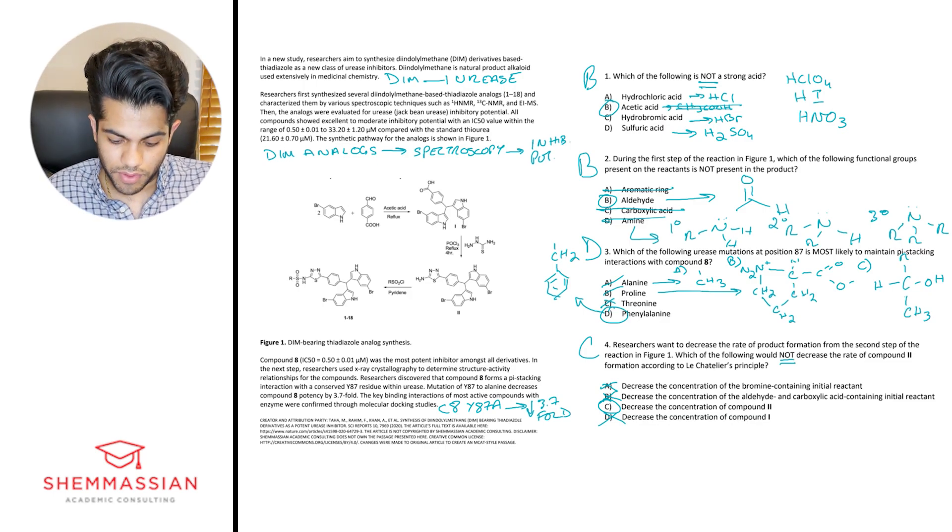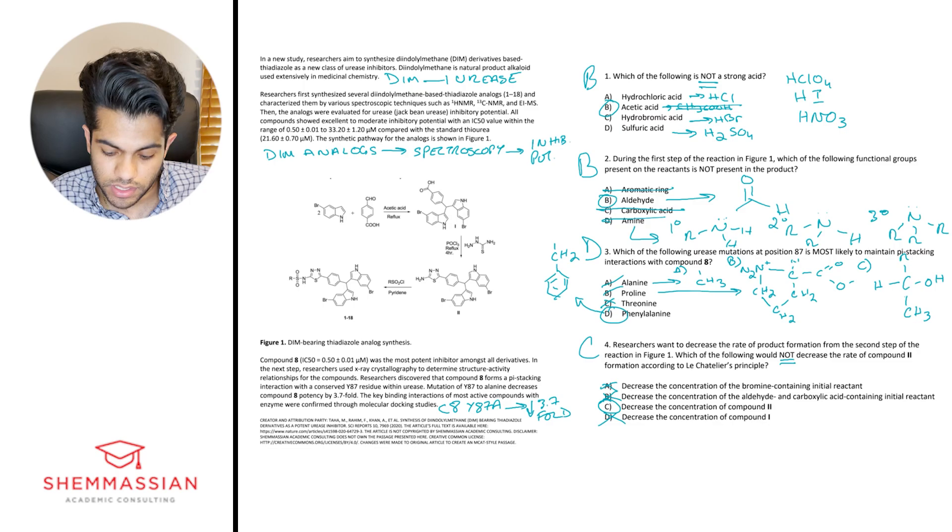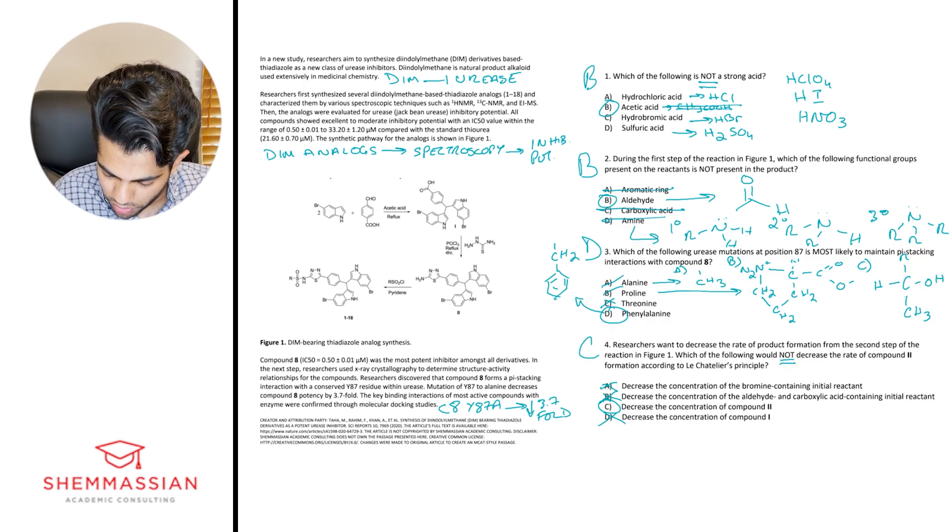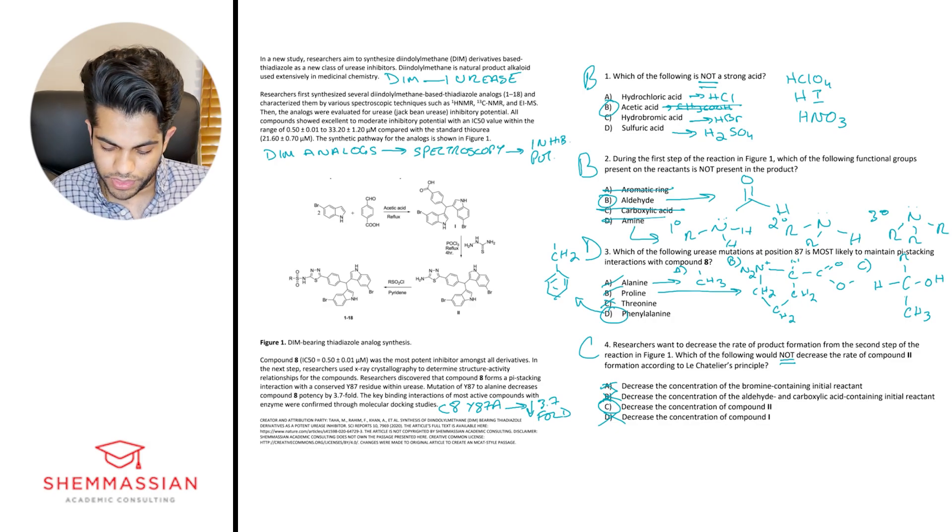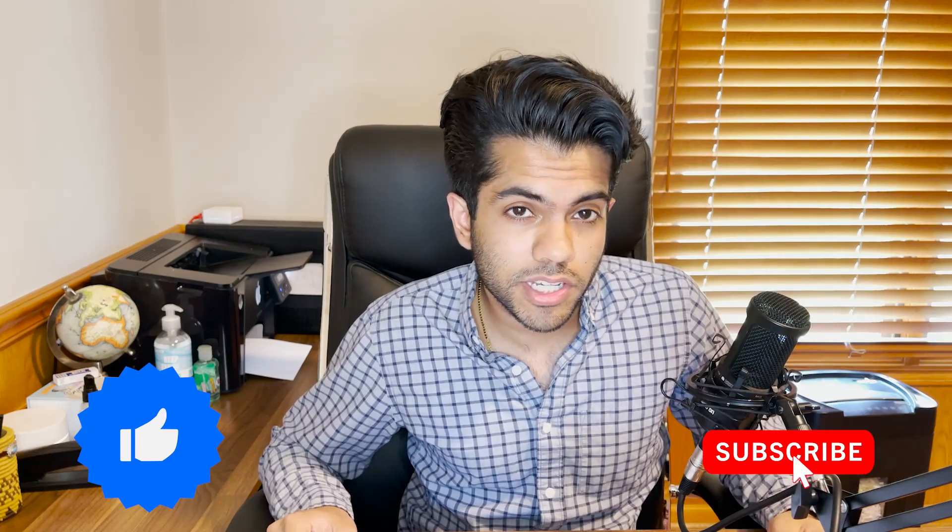Alright, so that's going to wrap things up for us today. So the key things really being, if you weren't able to get question one, definitely review your strong acids. For question two, definitely review the functional groups. Three, your amino acids are huge, right? And for four, review Le Chatelier's principle. These are all high yield topics for test day. So make sure that if you did miss any of these questions that you go back to your content review books, or check out one of our MCAT review content guides on these topics that you might have struggled with. Thanks so much for watching this video. If you found it helpful, please give it a like, subscribe to our channel to stay up to date with all our content and check out the link in the description below where you can sign up for a free MCAT question of the day email, where you basically will just get a free MCAT question sent to your email every morning. So that's going to wrap things up for us today. Have a great one, and happy studying.